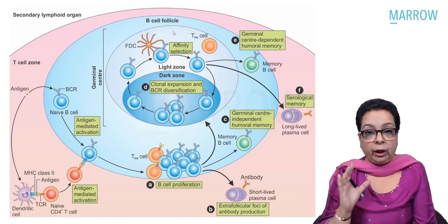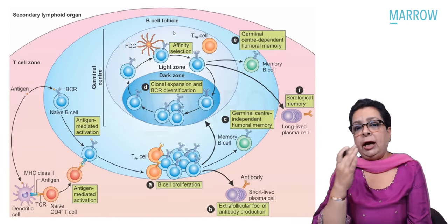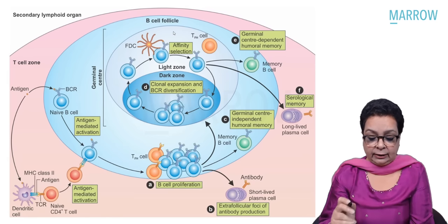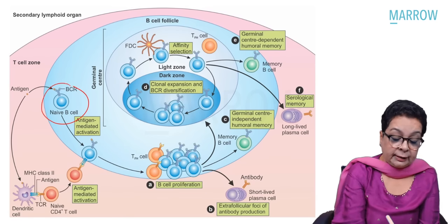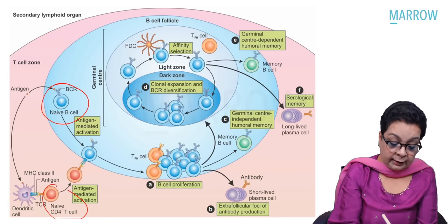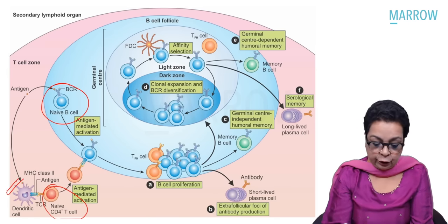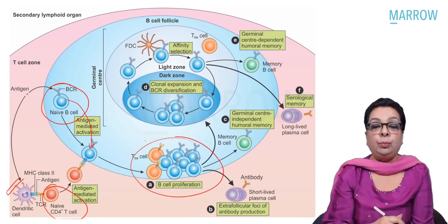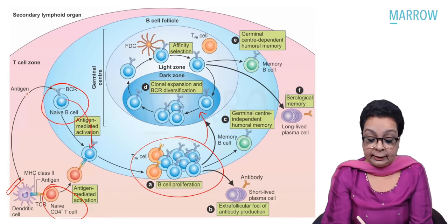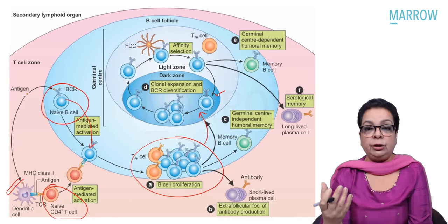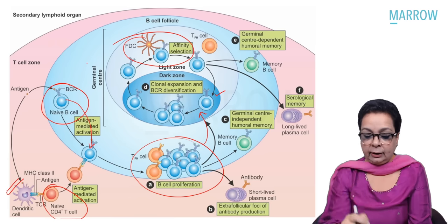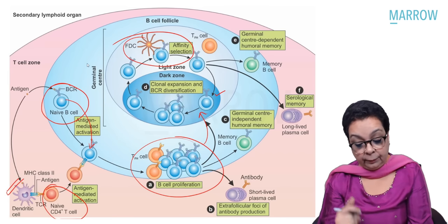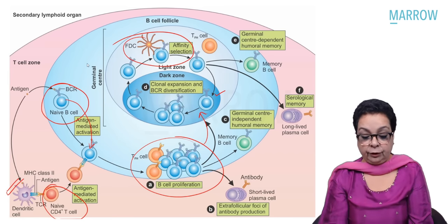This diagram shows affinity maturation — a B cell recognizes an antigen, a T cell is activated by the dendritic cell, the B cell gets T cell signals, proliferates, migrates to germinal centers, undergoes somatic hypermutation, and follicular dendritic cells select only B cells secreting higher-affinity antibodies. These high-affinity B cells then circulate and secrete high-affinity antibodies. This exact topic was asked in the November INSET exam of 2020.